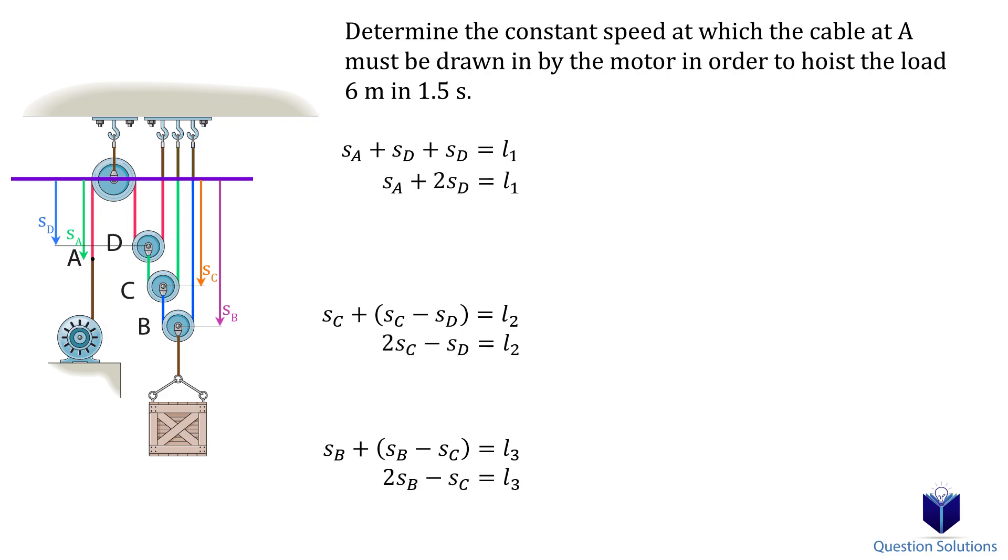Let's simplify these equations. Now we can take the derivative to get the velocity. The question says block B must go up 6 meters in 1.5 seconds, which means it needs a velocity of 4 meters per second.